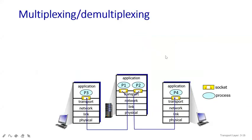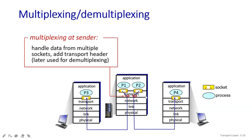Looking in detail, P1 and P2 represent processes — all four processes are there. The yellow marks you see are your sockets. We are going to send a message from process to process. In the application layer, if there is a server and two clients, one process will communicate with client one and another process with client two. In the transport layer, multiplexing handles how we send the data from the sender side.